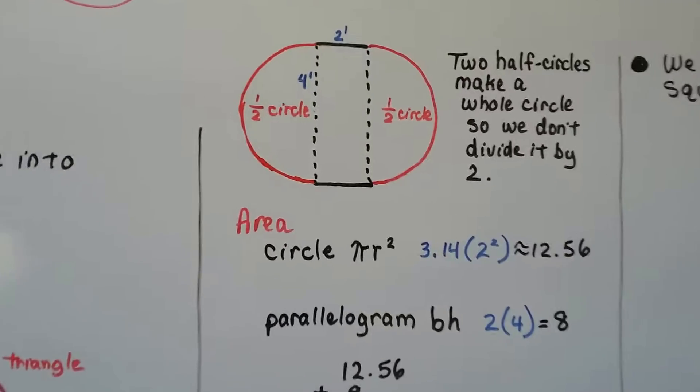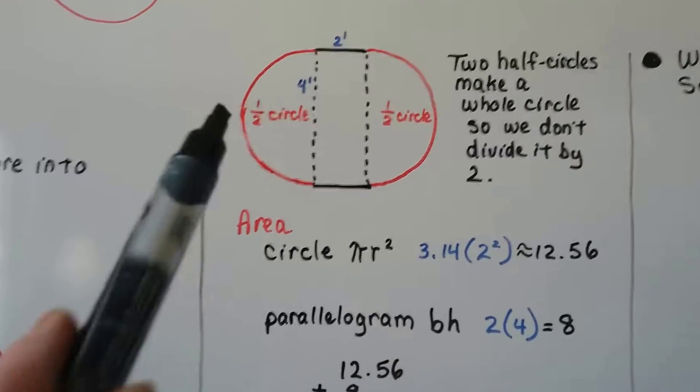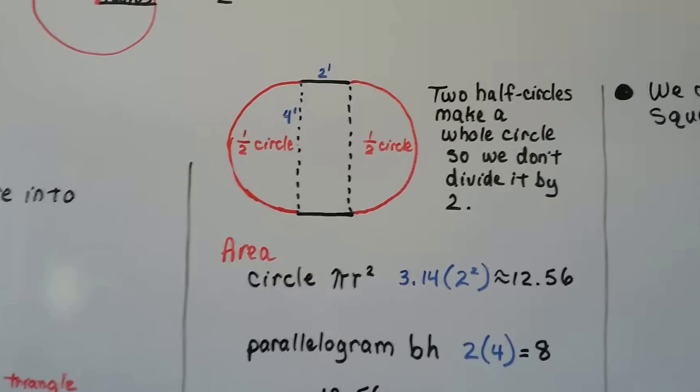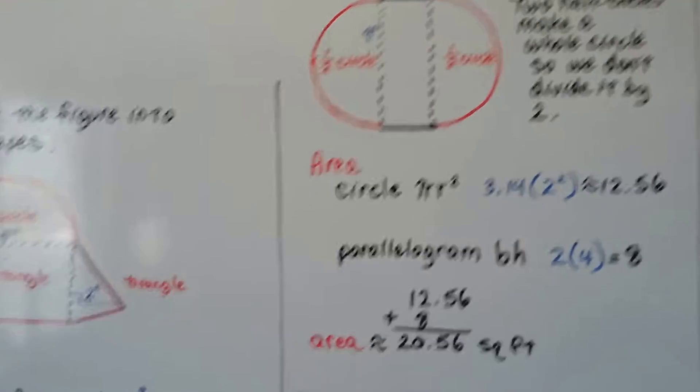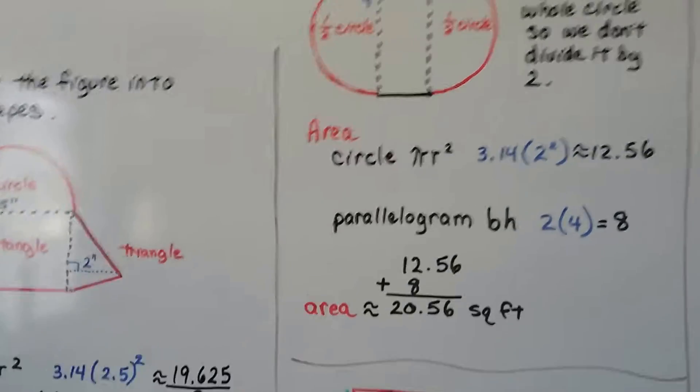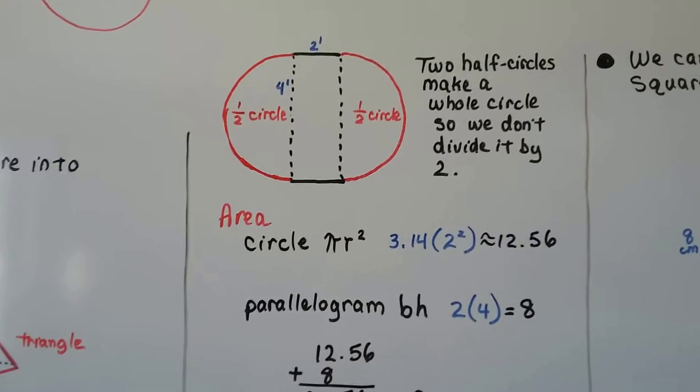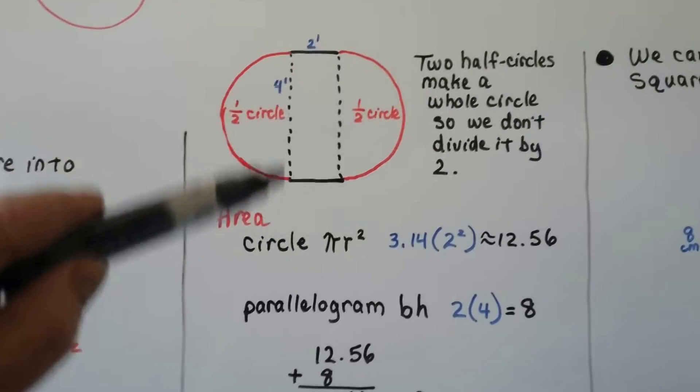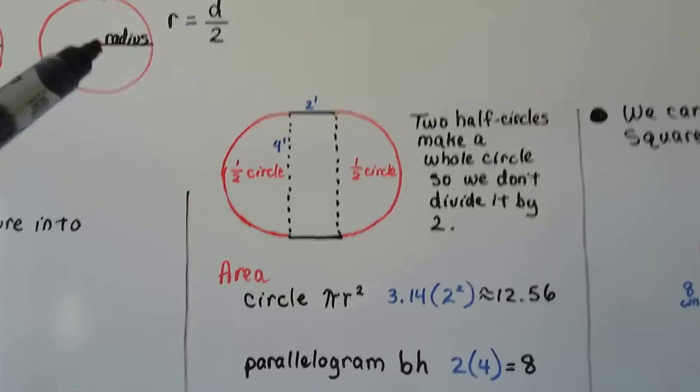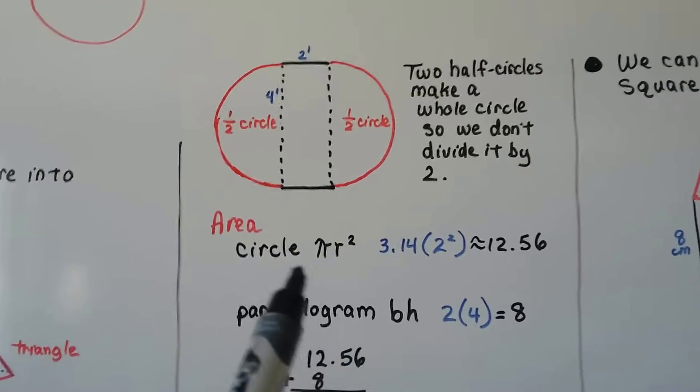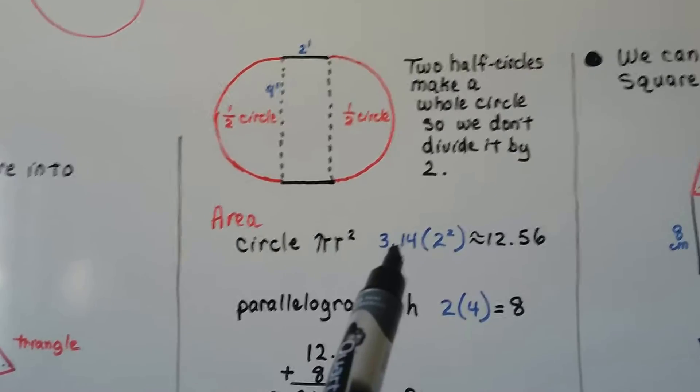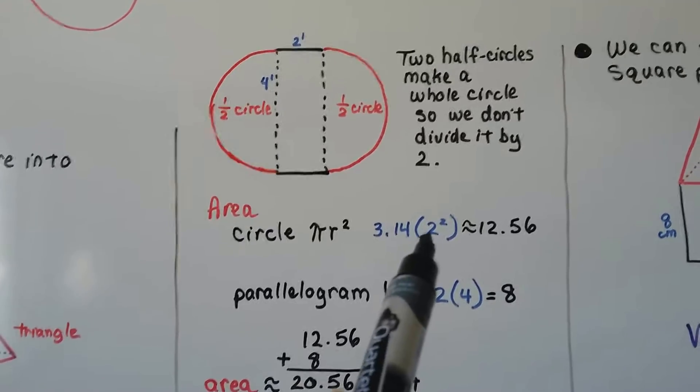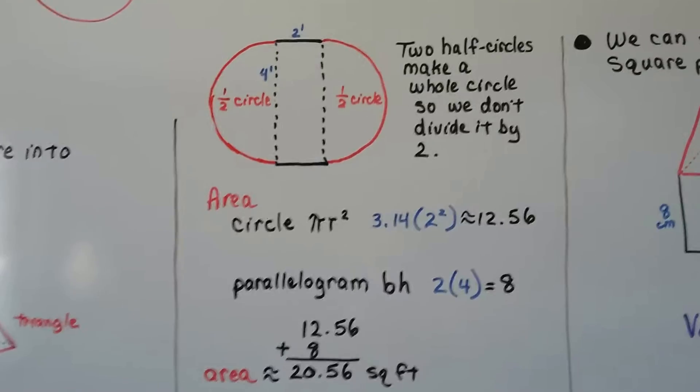For this one, if you look at this, we really do have a full circle, but it's got a rectangle in the middle. The two half circles make a whole circle, so we don't have to divide it by 2, like we did here. The area of a circle is pi r squared, and we look here, this is our diameter of 4. We need half of that for the radius, so the radius is going to be 2. For pi r squared, we're going to do 3.14 times 2 squared, which is 3.14 times 4, which comes out approximately as 12.56.